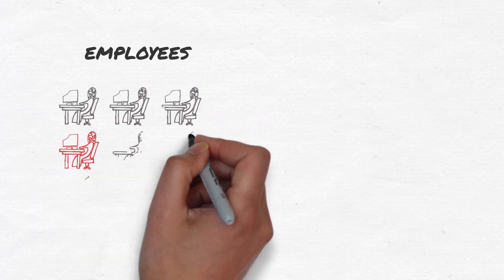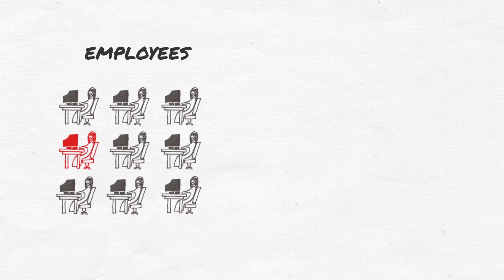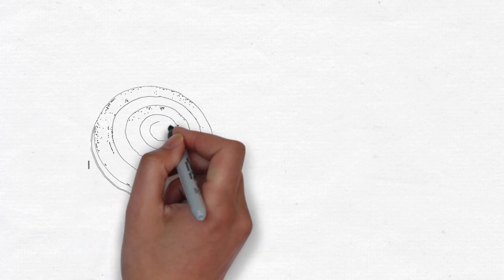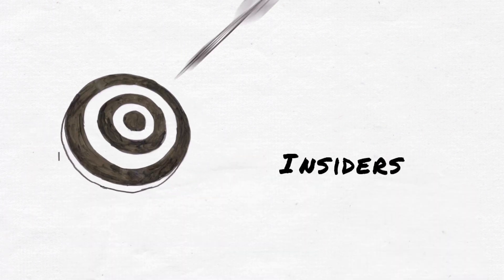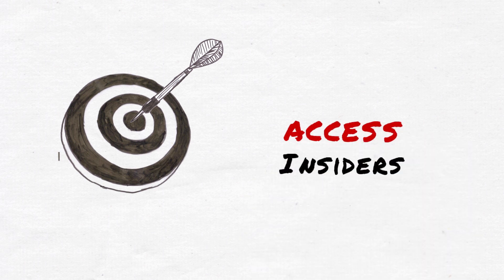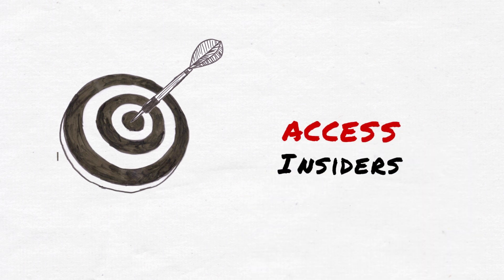An insider can be anyone who works in our organization, including employees and contractors. Insiders are prime targets because they have the means and the methods to cause a great deal of harm since insiders are often given more access than what they need to do their jobs.